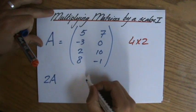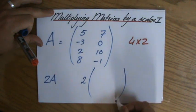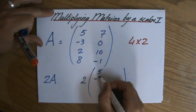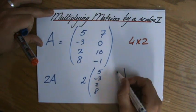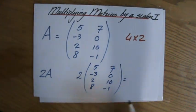I do the following. Sometimes you see it like this, they just put a big 2 in front of it and those brackets: 5, minus 3, 2, 8, 7, 0, 10, minus 1